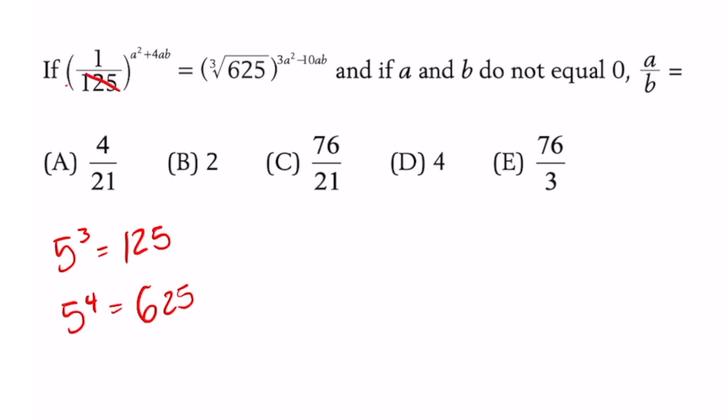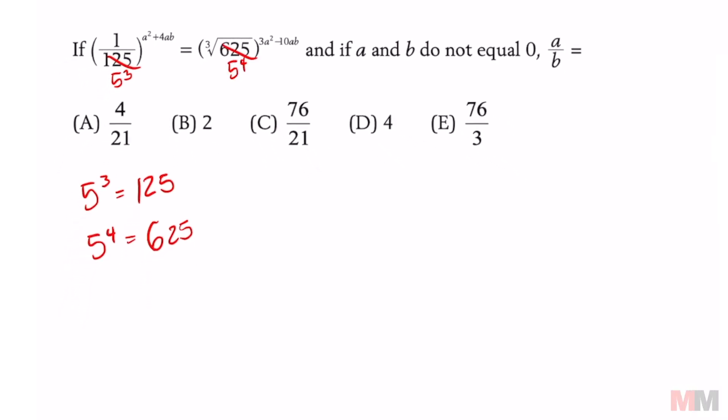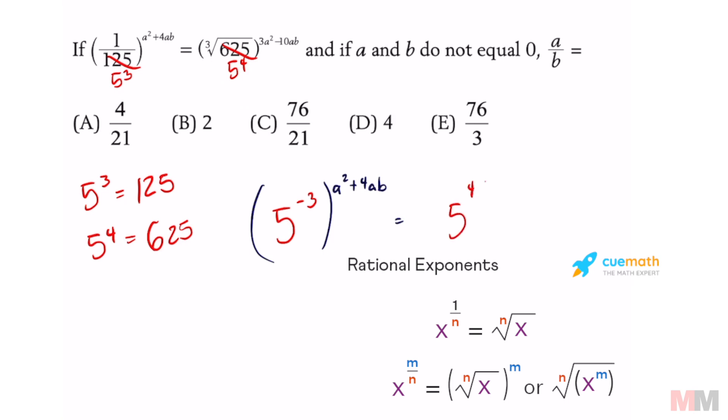Let's go ahead and substitute those in. You can change that to five to the third, and this to five to the fourth. If you want to write this so it's not a ratio, we can just change five to the third with a negative exponent, because that's going to equal the same thing. And if you don't want to deal with radicals, we can write that as an exponent. That is going to be the same as five to the fourth over three.